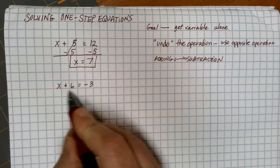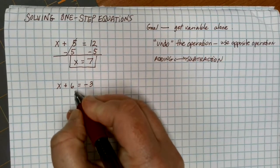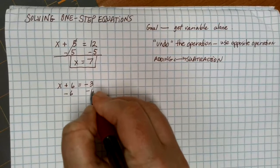I want to get the x by itself. Right now, the 6 is being added, so to get rid of it or undo the 6 that's being added, I'm going to have to subtract 6, and I do that from each side.